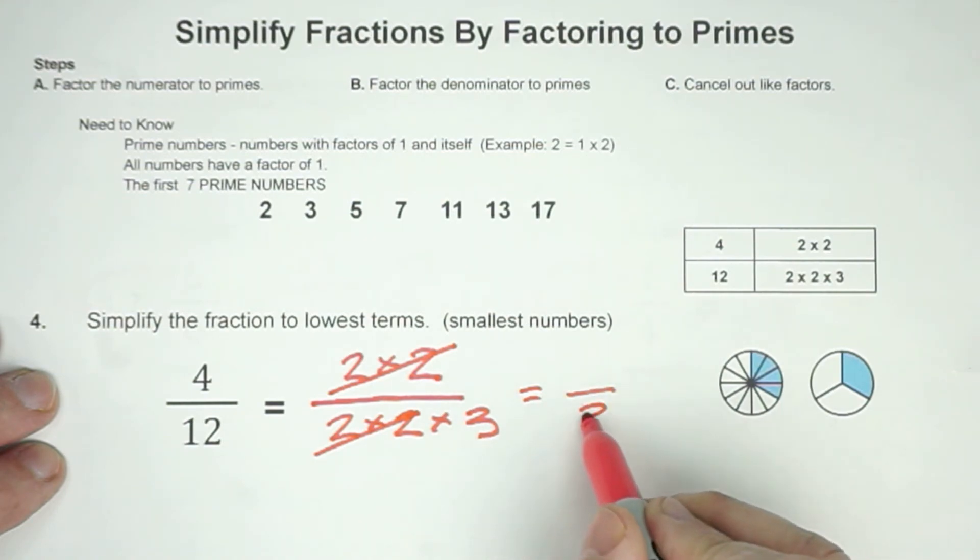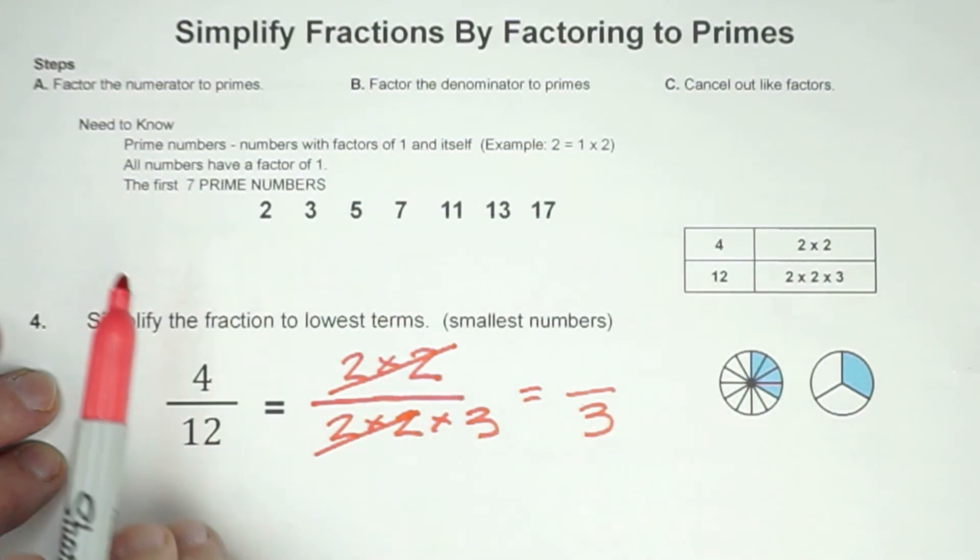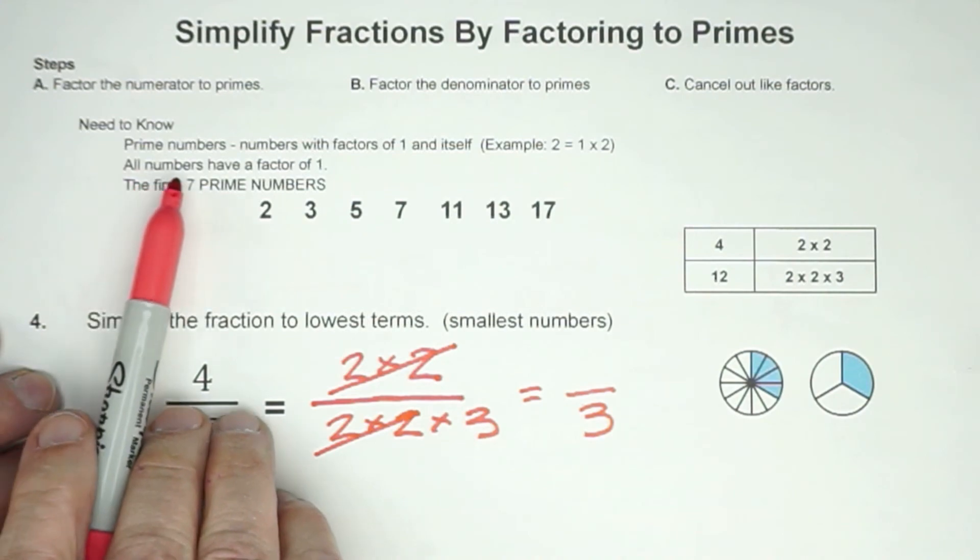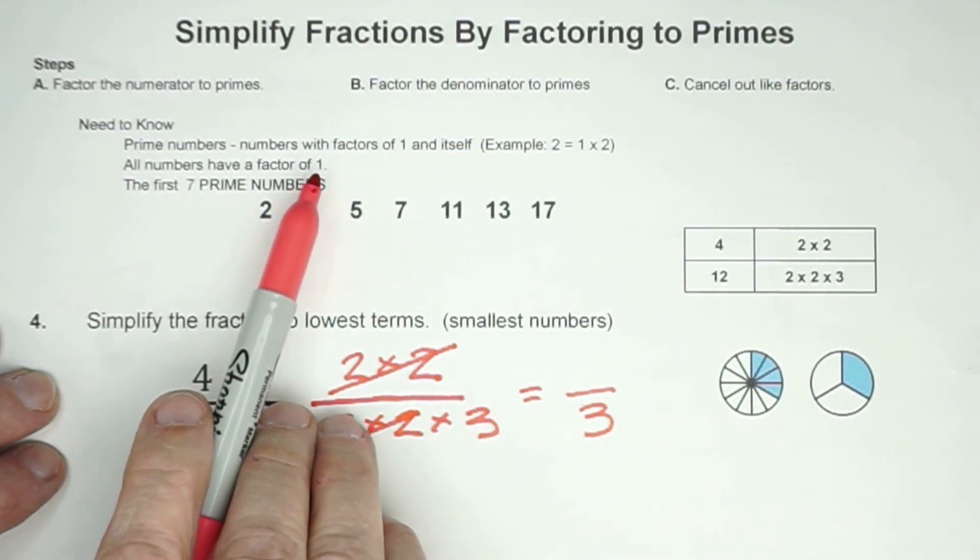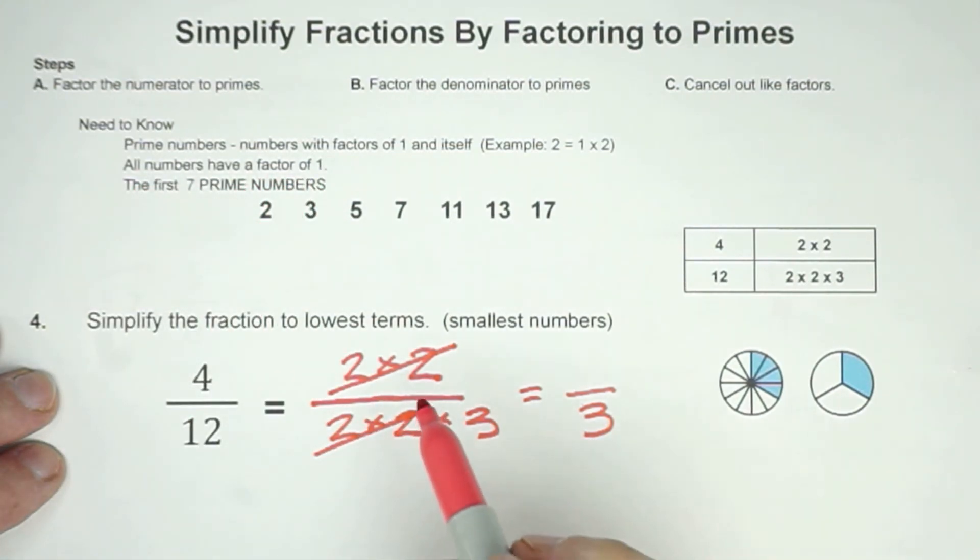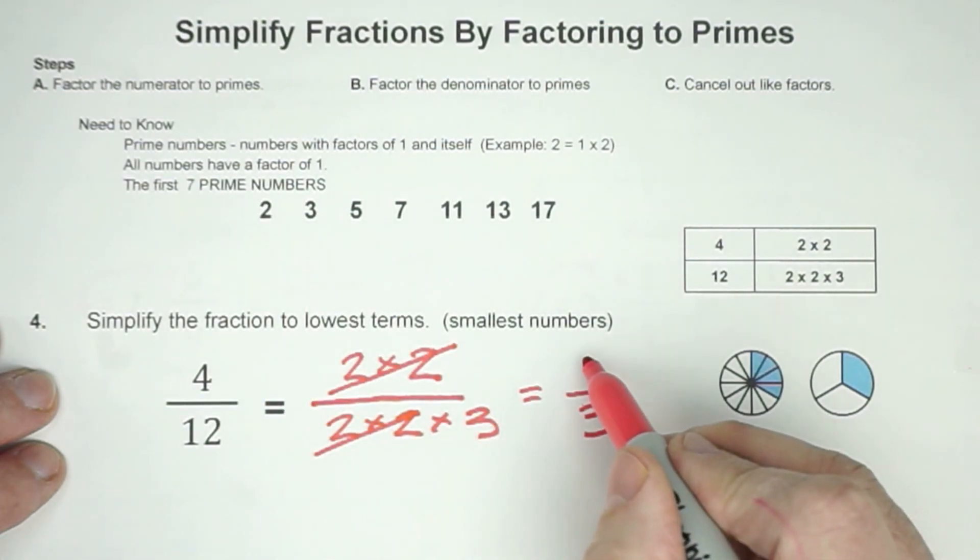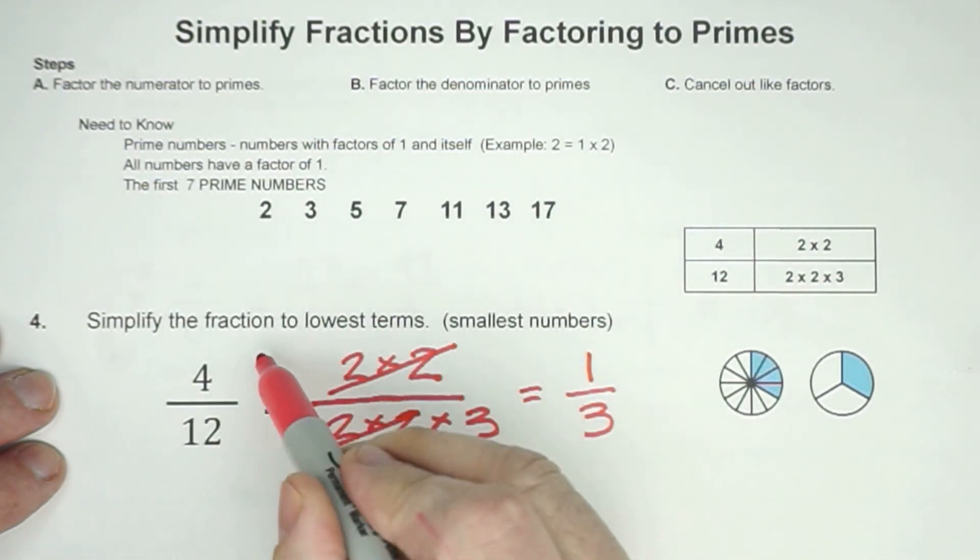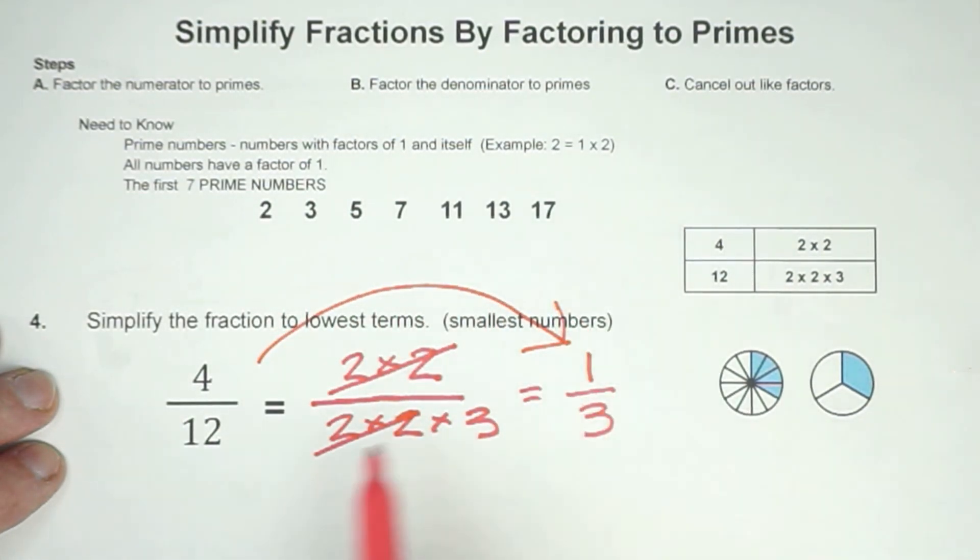So this is interesting because what goes up there? Well, remember up at the beginning of the lesson, we said that all numbers have a factor of 1. We just don't usually show that, but you could really say that it's 2 times 2 times 1, but you could actually show times 1 times 1 forever. So we don't usually show that, but we know that all numbers have a factor of 1. So 4 twelfths simplifies to 1 third, and we're showing that right here.